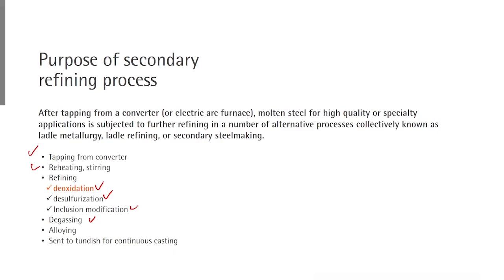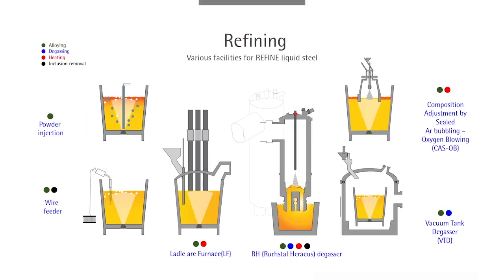Depending on steel product types, certain alloying elements must be added into liquid steel. Once chemical compositions and temperatures are well adjusted, the steel is sent to the tundish for continuous casting, which will be discussed in the next lesson.